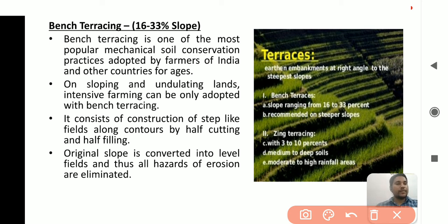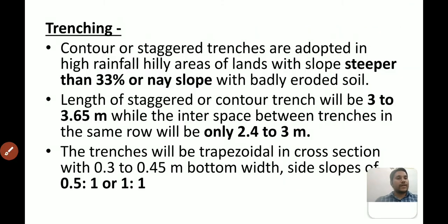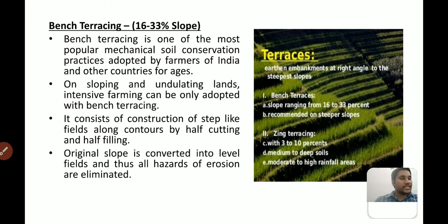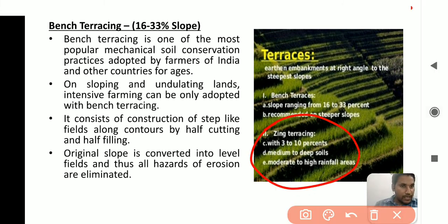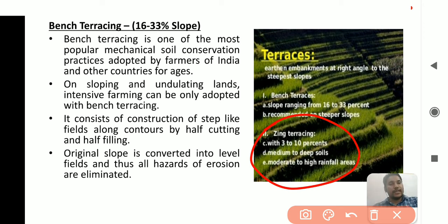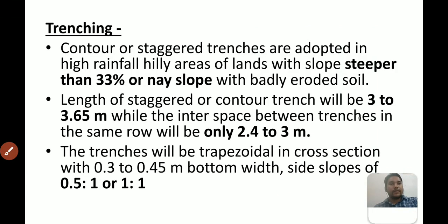Before trenching, we should also know about zinc terracing. Zinc terracing is applied where slope is 3 to 10 percent, soil is medium to deep, and rainfall is moderate to high (more than 600 mm). These are the key parameters for zinc terracing.